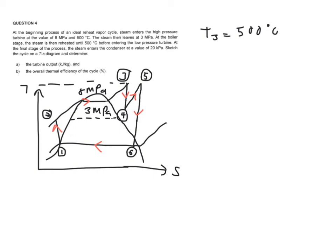At the boiler stage the steam is then reheated until 500 degrees C. So now this is the reheated part and it is reheated back to the same temperature over here. So you will have your T5 is equal to 500 degrees C as well.